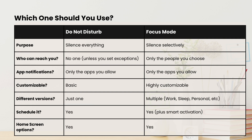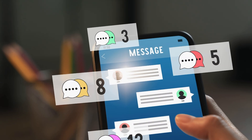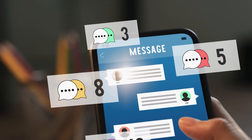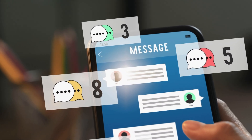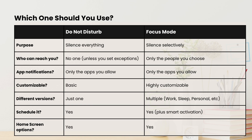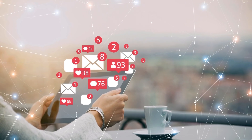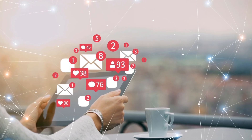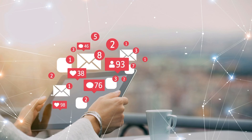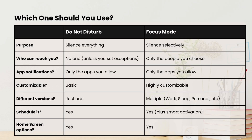So what's the difference between Do Not Disturb and focus modes? They're both designed to help you stay in control of your notifications, but they work a little differently. Do Not Disturb is the original. You turn it on and it silences all calls, messages, and alerts, unless you set exceptions.